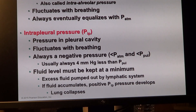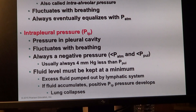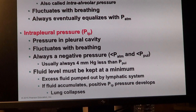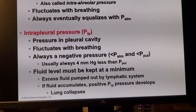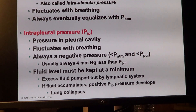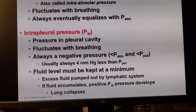Then we have intrapleural pressure — the pressure inside the pleural cavity. This pressure is always negative; it's always four millimeters of mercury less than pulmonary or atmospheric pressure. This must remain so because it would prevent lung collapse.